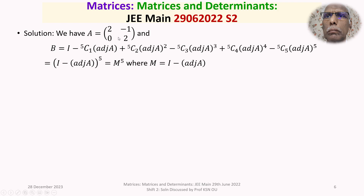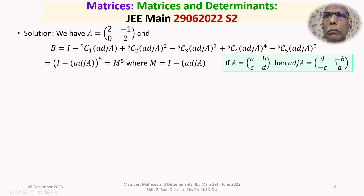Now, for a 2 by 2 matrix A with entries [a, b; c, d], the adjoint of A is given by swapping the diagonal entries — so a and d are exchanged — and changing the signs of the anti-diagonal elements, so b becomes minus b and c becomes minus c.